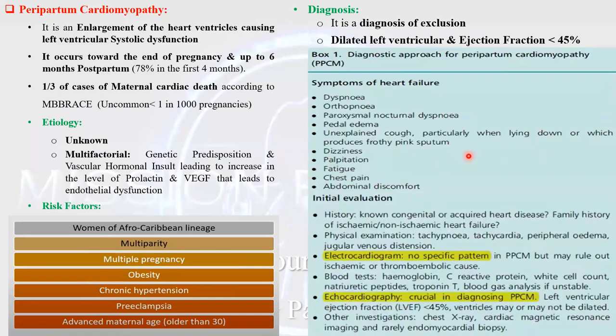When you have a suspected case of peripartum cardiomyopathy, you must perform an initial evaluation in an organized and systematic way. First, the history: ask about any history of congenital or acquired heart disease and family history of similar cardiac conditions. Then the examination: general, abdominal, and cardiac examination. For investigations, do an ECG, echocardiography, and blood tests. The ECG has no specific pattern; any specific pattern would direct you toward another cause such as ischemic or thromboembolic disease.